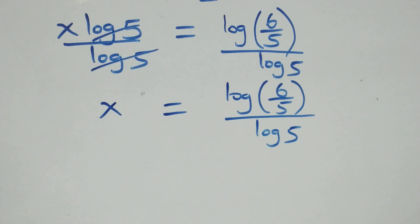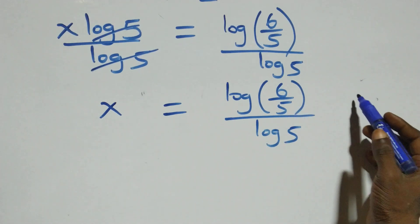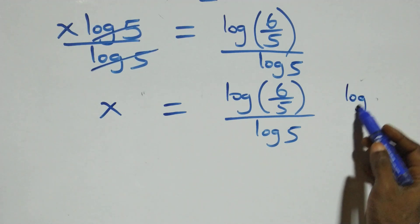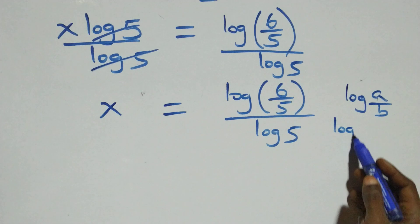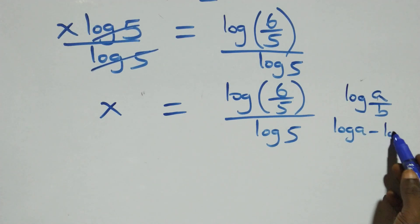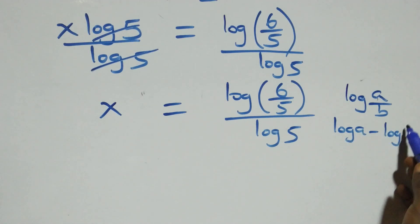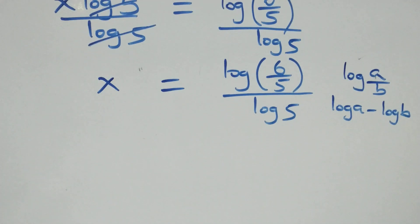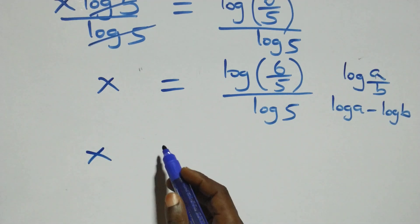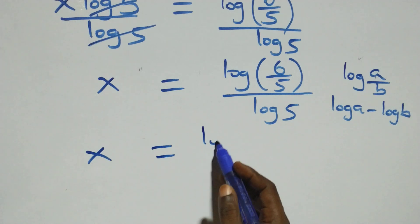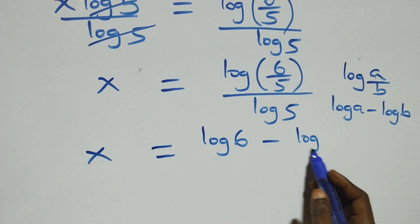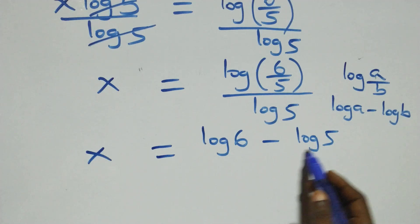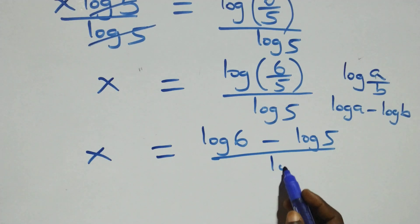Then, next step here, this follows from the law of logarithms when we have log A over B. This is the same thing as log A minus log B. So here this becomes x equals to log 6 minus log 5, over log 5.